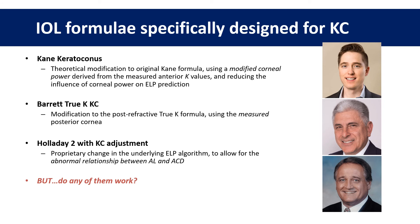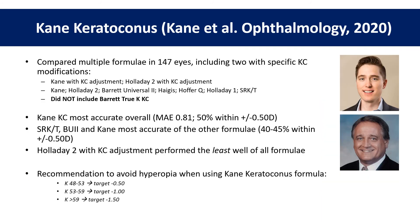But do any of them actually work? Jack Kane recently published a comparison of multiple formulae, including his own and the Holliday 2 with KC adjustment. He didn't investigate the Barrett TRU-KKC formula, I think because it wasn't available at the time of the study. They found that the Kane KC was the most accurate overall, but still with only 50% within half a dioptre of target. The SRK/T, the original Kane, and the original Barrett Universal were the most accurate of the rest, but sadly the Holliday 2 with KC adjustment performed the least well. Based on these results, Kane's recommendation to avoid hyperopia was to aim for increasing amounts of myopia depending on the keratometry, as shown at the bottom.